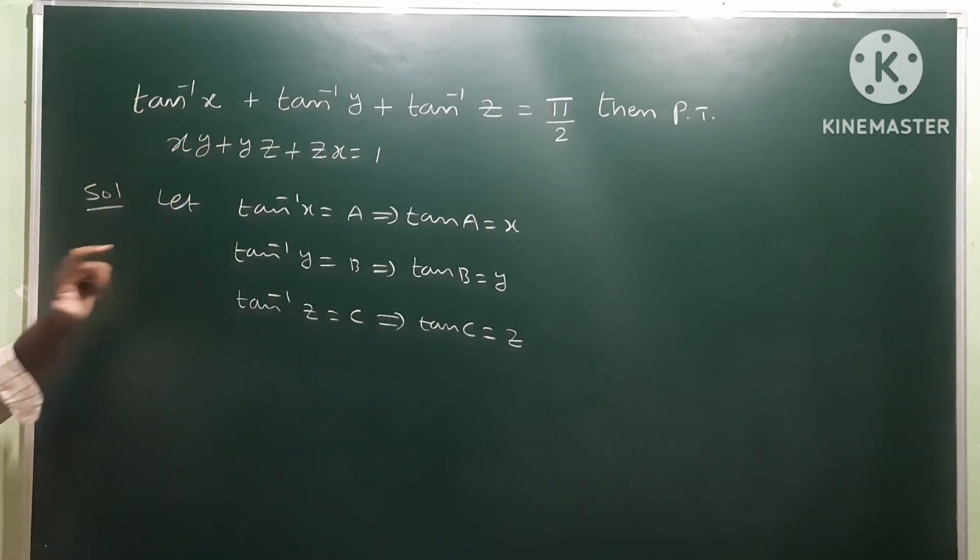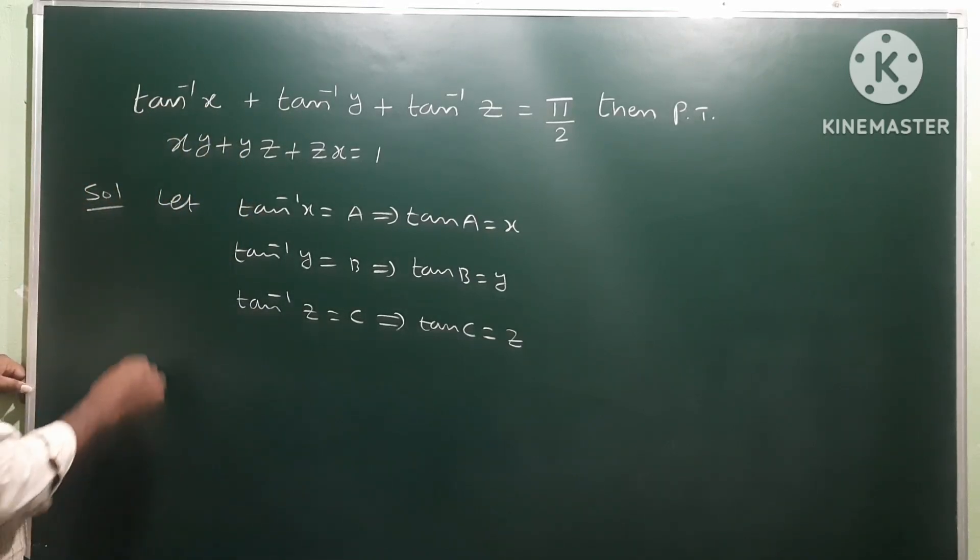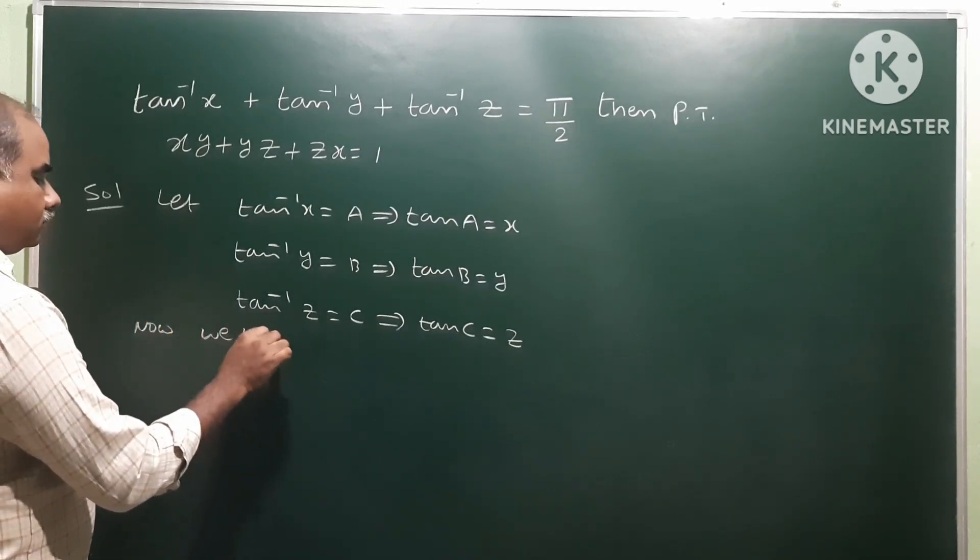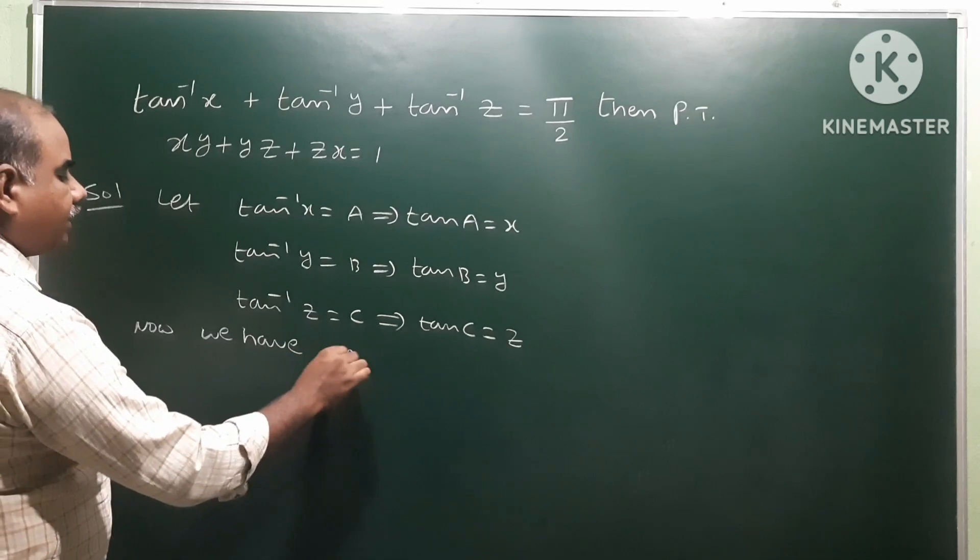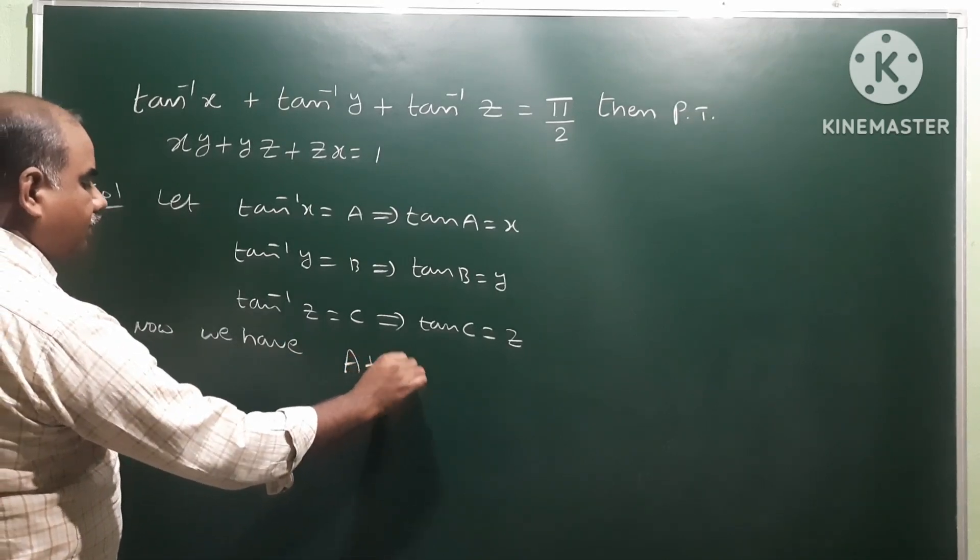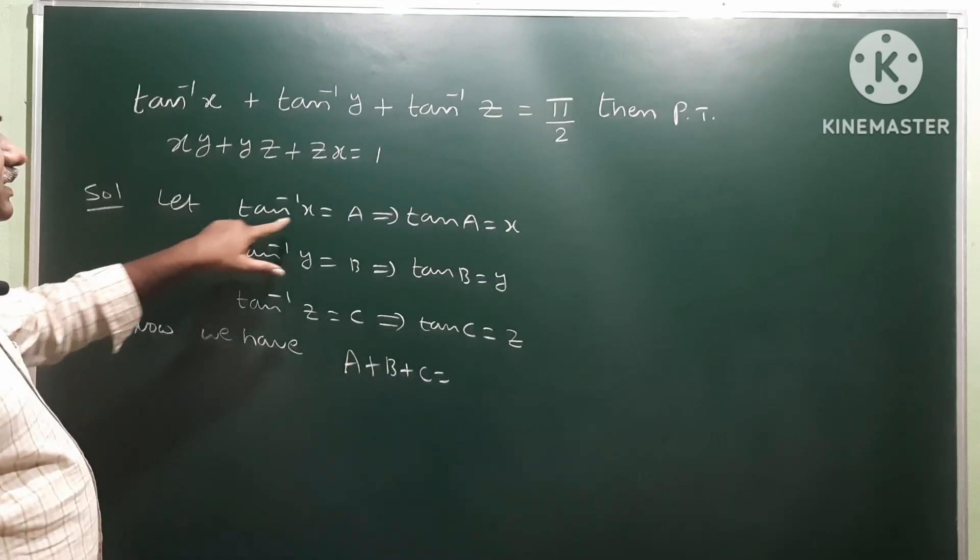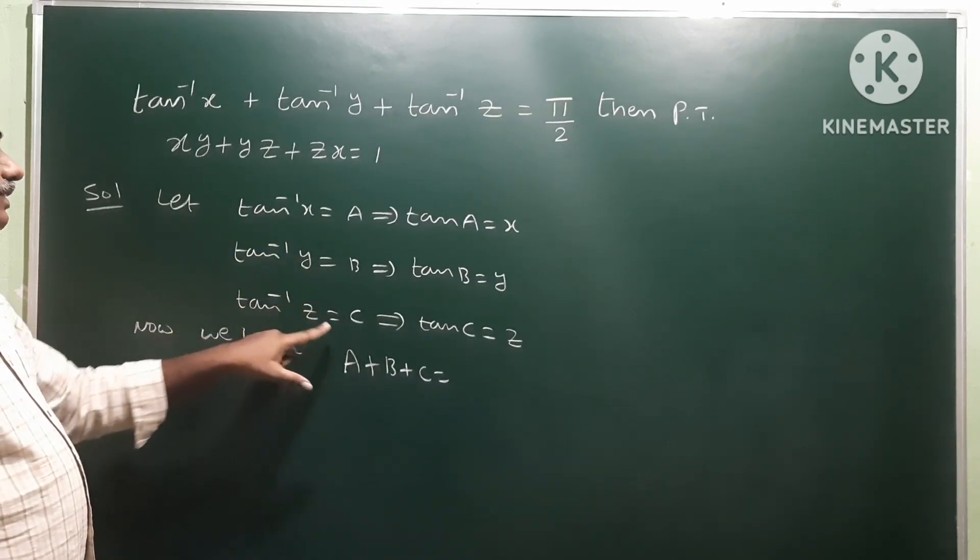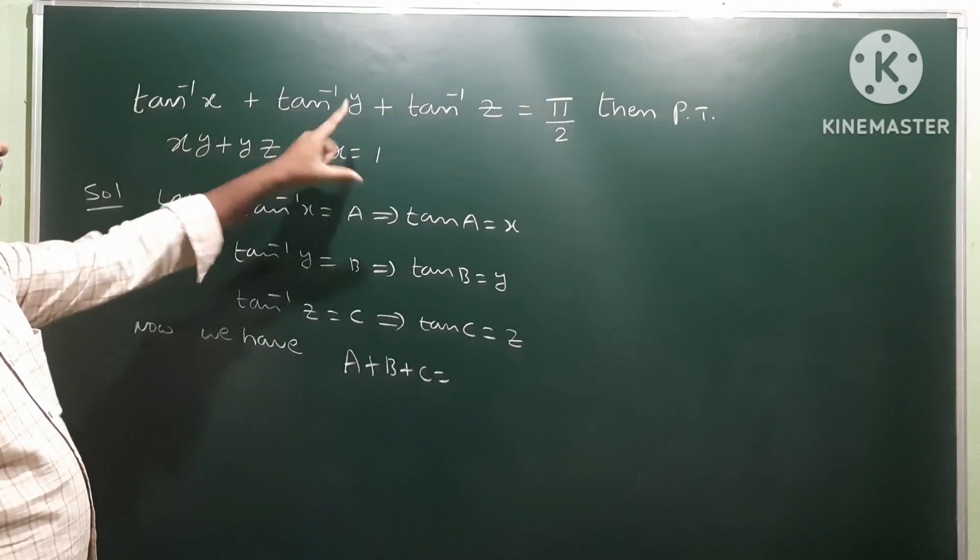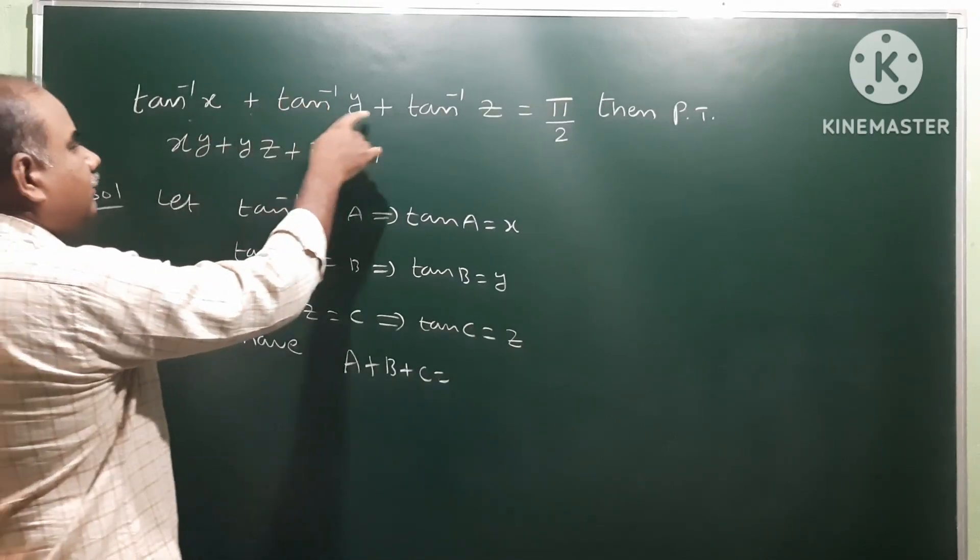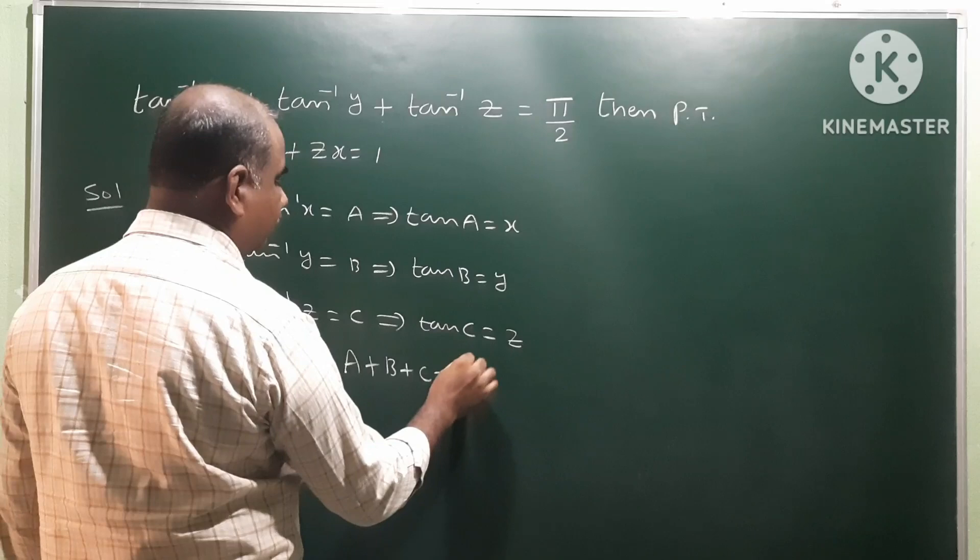So, we have a plus b plus c. Tan inverse x is a, tan inverse y is b, tan inverse z is c. Substitute all these values in this given condition: a plus b plus c is equal to π by 2.